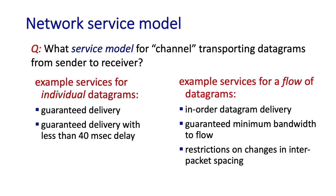That is, the network layer would be responsible for reliable datagram delivery rather than the transport layer as we've seen. There might be guaranteed delivery with bounded delay, so that the service not only guarantees delivery but delivers the datagram with a specified host-to-host delay bound — for instance, less than 40 milliseconds.